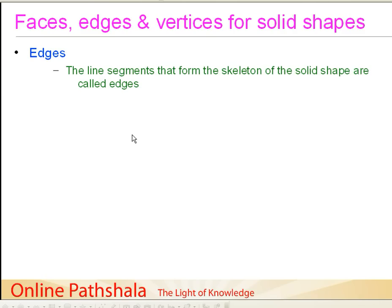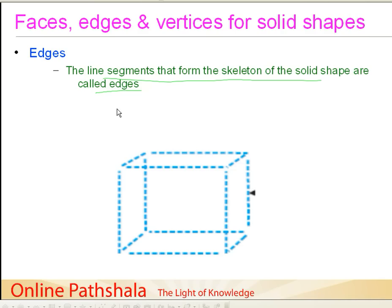First, what do we mean by an edge for a solid shape? Put in simple words, edges are nothing but the line segments that form the skeleton of the solid shape. Let us take the example of a cuboid here, and if we have a look at this cuboid closely, we will find out that the cuboid is constructed out of line segments.